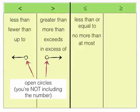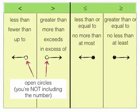For less than or equal to, you may also have no more than or at most. And there's our symbol for graphing that solution. For greater than or equal to, we have greater than or equal to, no less than, at least. And that's our symbol for graphing that solution.